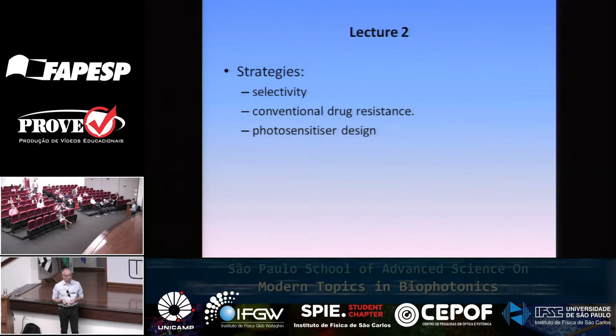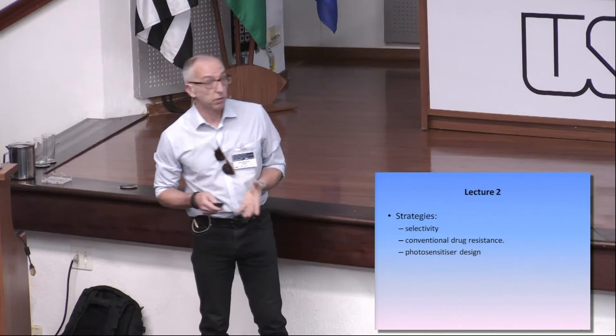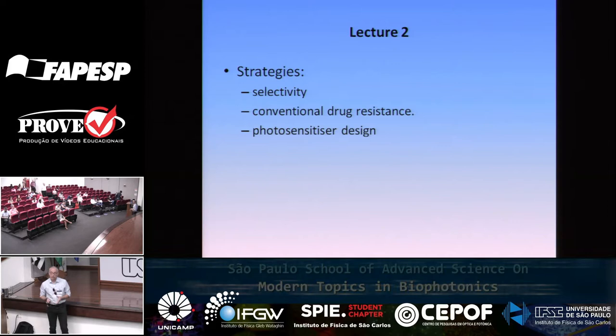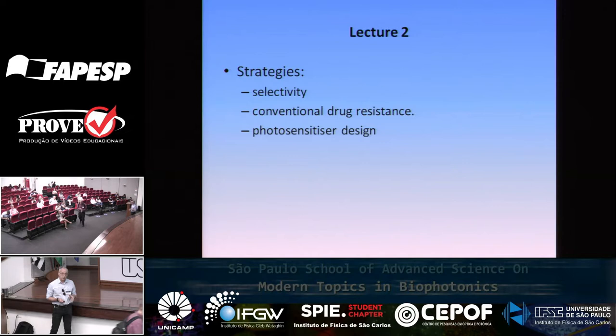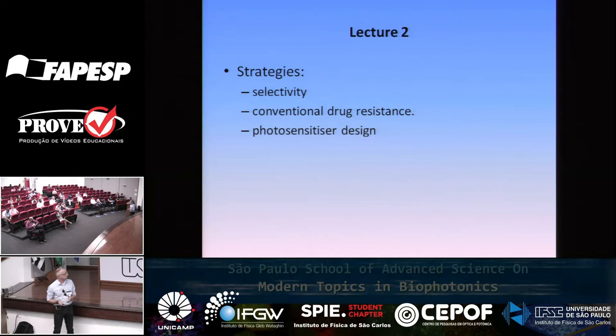I'll speak a little bit about selectivity because there's a very obvious correlation. Then I'll talk about conventional drug resistance, because that's really the big problem that we have and that we can address with the photo antimicrobials. And then I'll talk quite a bit about how we design photosensitizers, the process, and what we can do, how we can improve structures. A lot will hopefully correlate with what Mauricio said yesterday about interactions.